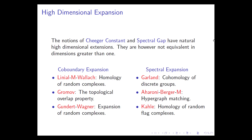The notion of spectral expansion is in fact much older. It dates back to work of Garland from the early 70s, where he proved the famous conjecture of Serre on the homology of discrete groups. There are various manifestations of the Garland method, including work on hypergraph matching and more recent work by Kale on the homology of random flag complexes.